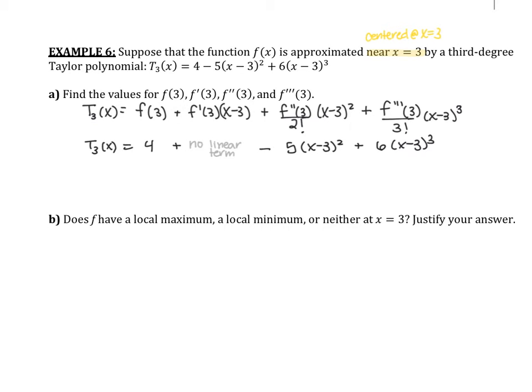Now looking at this, I've got some pretty easy answers. I can see from here that f of three has to be four. So if I wanted to find f of three, I know that's four. Now, what I also know, because I don't have a linear term, is I know that f prime of three equals zero.